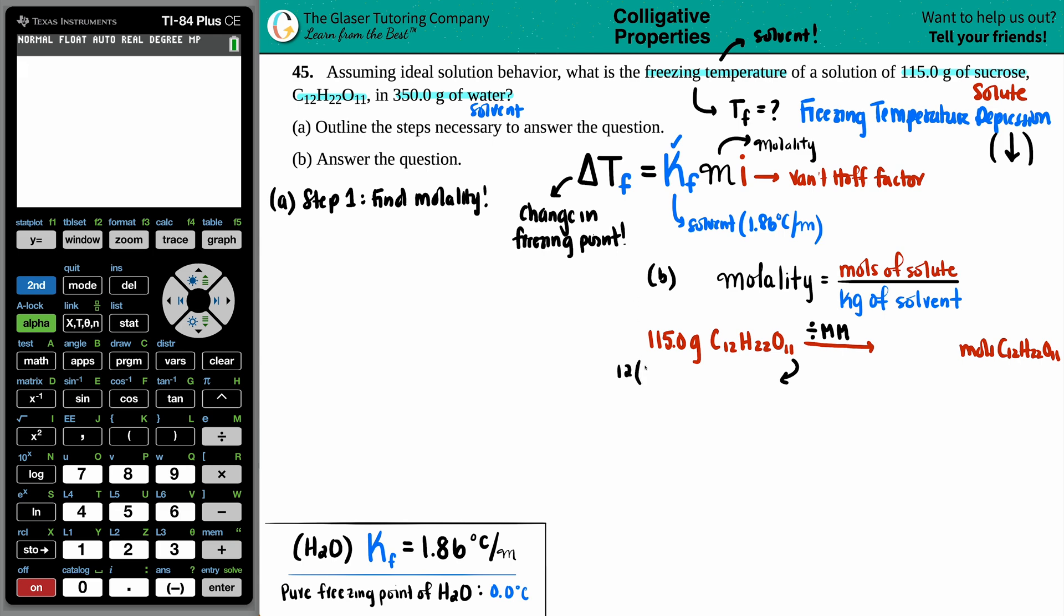So we have 12 carbons. Each carbon is on my periodic table 12.01 plus 22 hydrogens. Each hydrogen is 1.008. And then we have 11 oxygens, which is 16. So 12 times 12.01 plus 22 times 1.008 plus 11 times 16. Everything looks good here. Let's press enter. Wowzies. That's the molar mass. So I'm going to take my 115 and divide it by the 342.296. There we go.